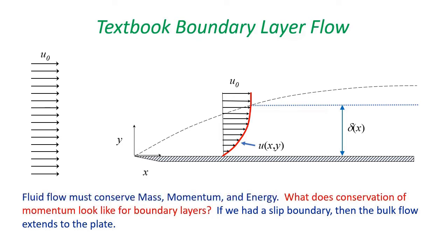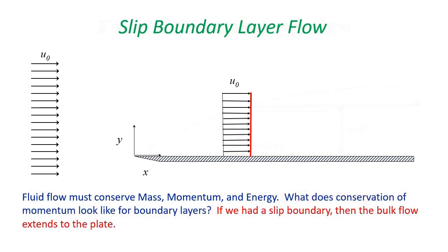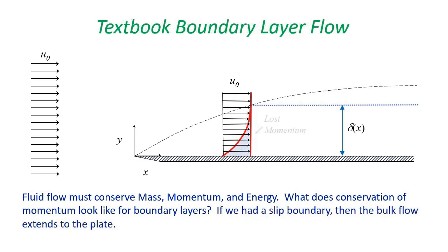The boundary layer forms because we have a no-slip boundary at the plate. If we had a slip boundary condition, then the bulk flow would extend all the way to the wall as if the plate was not there. For incompressible flow, the no-slip boundary condition means this small area here represents lost momentum due to the boundary layer.